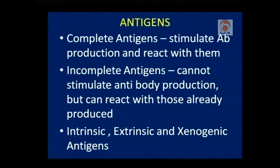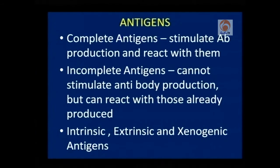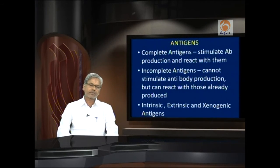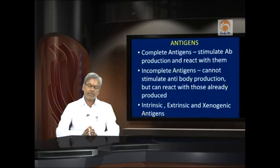Complete antigens stimulate antibody production and can react with them. Incomplete antigens do not stimulate antibody production but can react with those antibodies already produced in the system. Based on the source, antigens are of three types: intrinsic, extrinsic, and xenogenic antigens. We often consider antigens to be foreign, but at times they need not be — our own tissues have their own antigens, and the antigens produced by each tissue differ from those of another tissue.